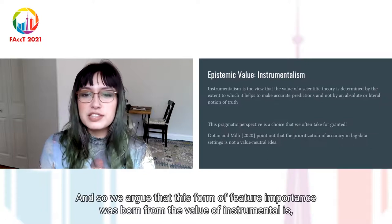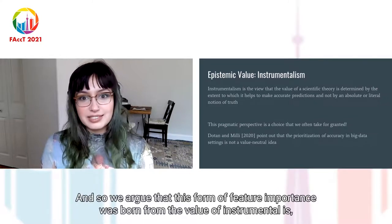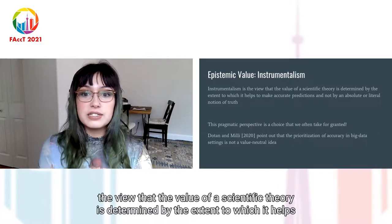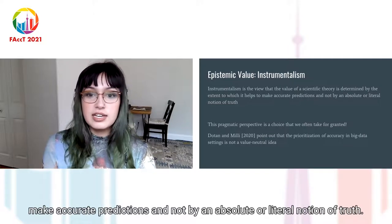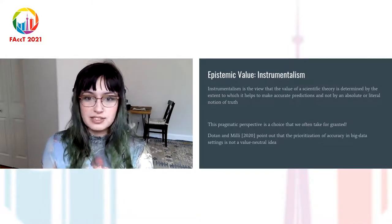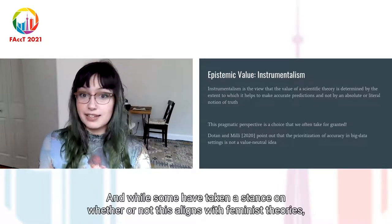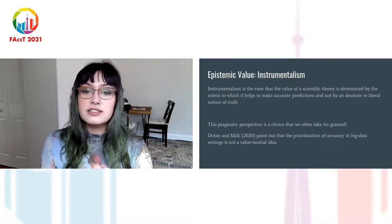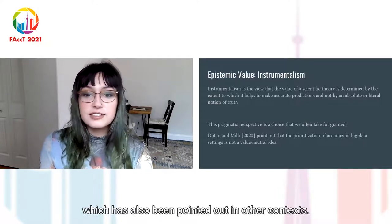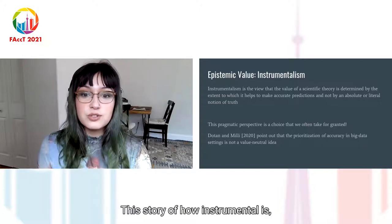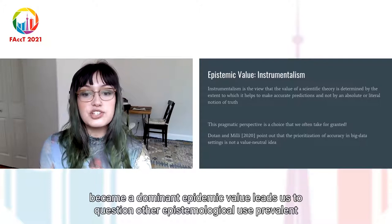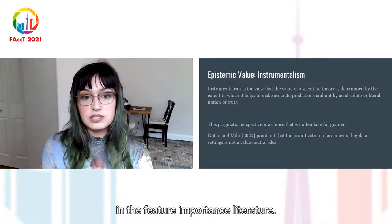And so we argue that this form of feature importance was born from the value of instrumentalism — the view that the value of a scientific theory is determined by the extent to which it helps make accurate predictions, and not by an absolute or literal notion of truth. While some have taken a stance on whether this aligns with feminist theories, the point is that this choice is not neutral. This story of how instrumentalism became a dominant epistemic value leads us to question other epistemic values prevalent in the feature importance literature.